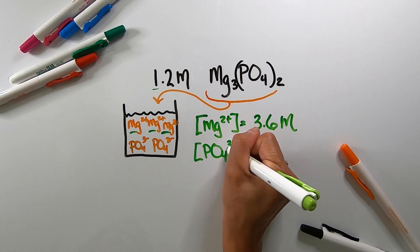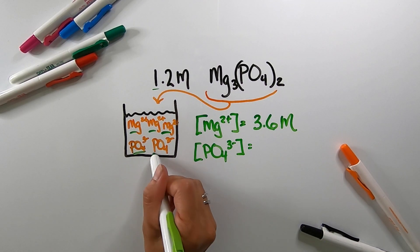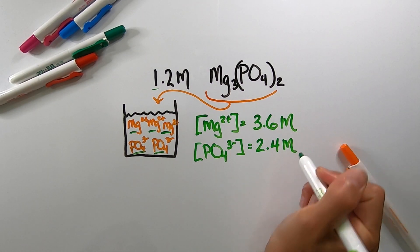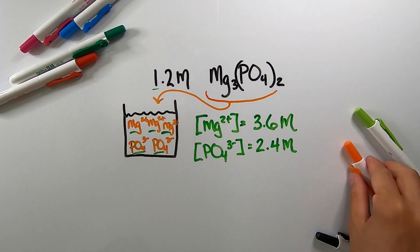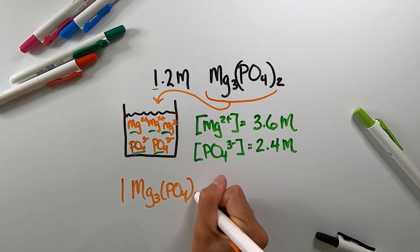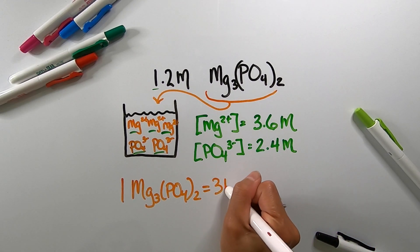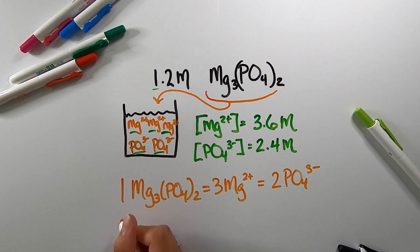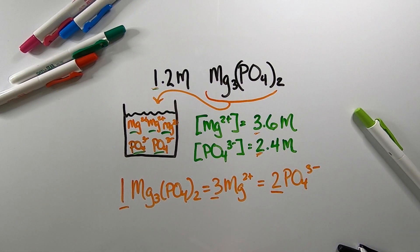If I were asked for the phosphate ion concentration in solution, I have two phosphate ions times 1.2, which is 2.4 molar concentration of phosphate ion in solution. For every one magnesium phosphate molecule, we release three magnesium ions and two phosphate ions — a 1 to 3 to 2 ratio, which is a 1 to 3 to 2 molar concentration ratio. No matter how complex the compound, just dissolve it in water and you should easily be able to determine ion concentration in solution.